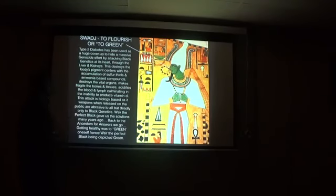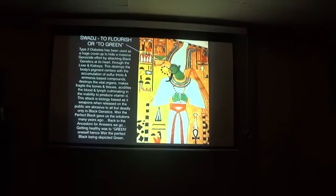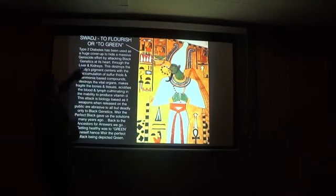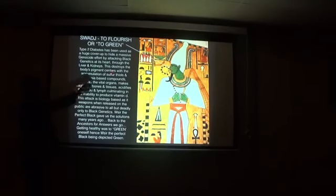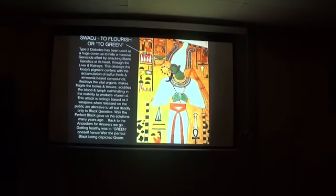Type 2 diabetes has been used as a huge cover-up to attack the liver and the kidneys. Very important. This destroys the body's pigment centers with the accumulation of sulfathiols and ammonia-based compounds. These are the guys causing all the damage associated with the variety of illnesses that come from the attack on our liver and kidneys.